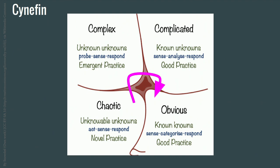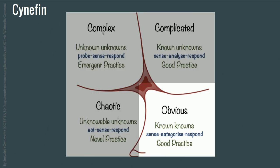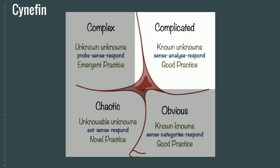The Cynefin model was introduced in the Harvard Business Review, and it's a way for leaders to make decisions about things by classifying problems in certain ways. In operations, we want to move things from the bottom left to the bottom right. In the obvious domain, we have things that are known knowns — established practice. We know what the inputs are and what the outputs are going to be. It's very simple, like launching something in AWS.